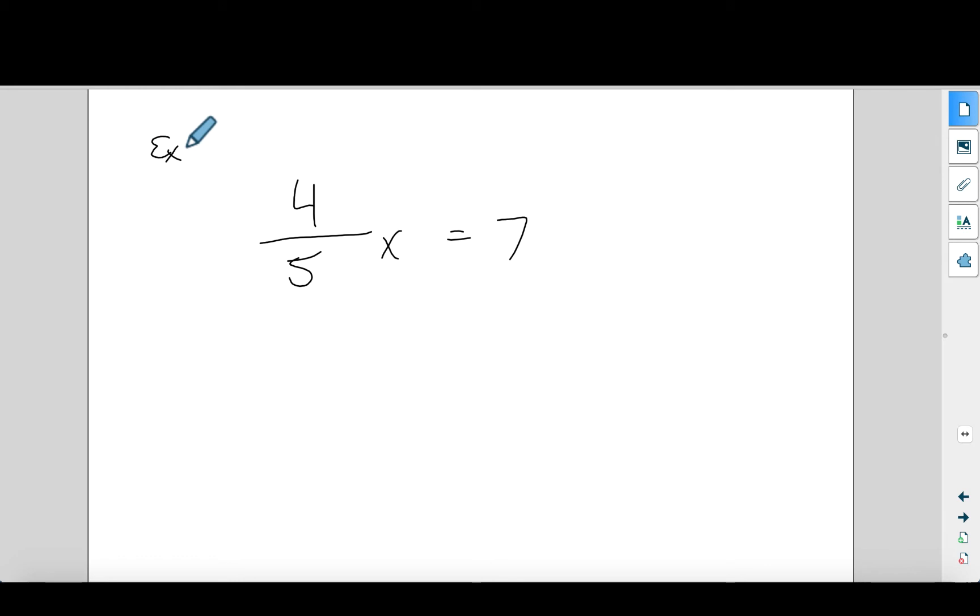Here's an example that we will see, not example number one, but something close to example number one of how to deal with a situation where we have a variable, we have x right here, and four-fifths x equals seven. In other words, four-fifths times something, we don't know what that something is, equals seven. How do we figure out what that something is?